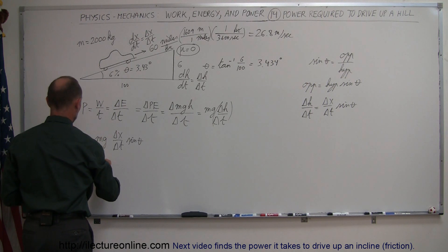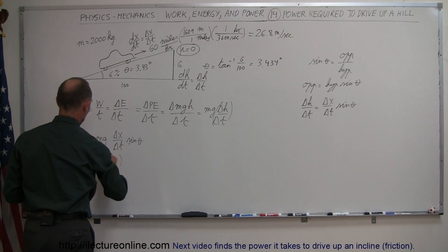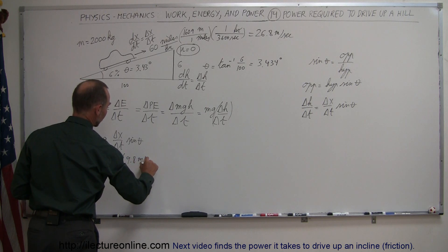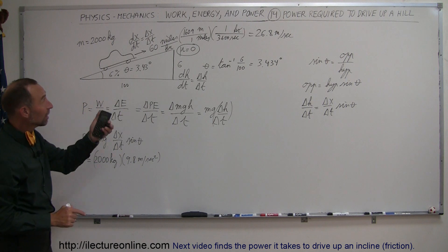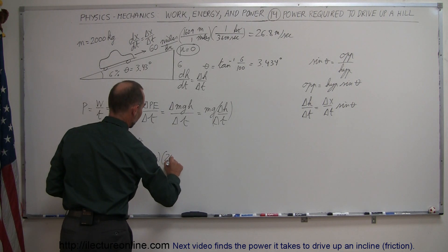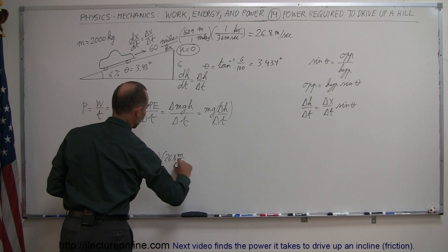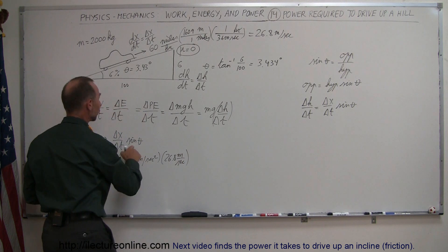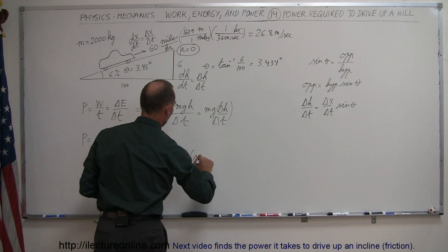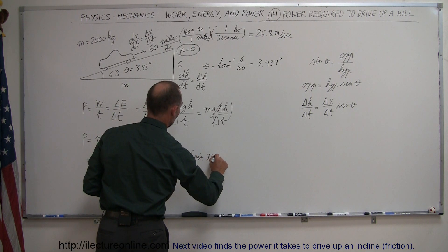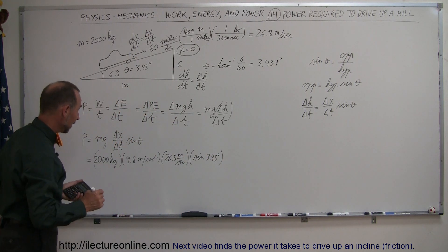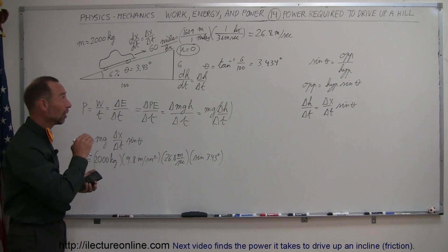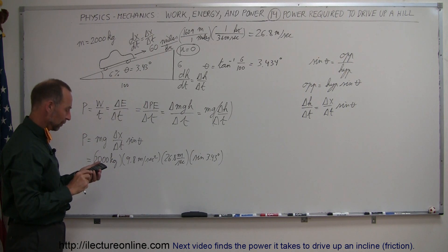So plugging everything in now, we have a mass of 2,000 kilograms, acceleration due to gravity 9.8 meters per second squared. So here we have the mg, the delta X delta T is the velocity, 26.8 meters per second. And finally, the sine of theta would be the sine of 3.43 degrees. Now we're ready to go ahead and figure out how much power that car requires to gain that height over that amount of time.